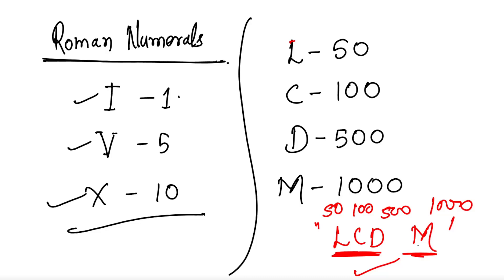Whenever you are confused to write about C, D, or M — just recall using the LCD trick. This way you can recall all these Roman numerals.